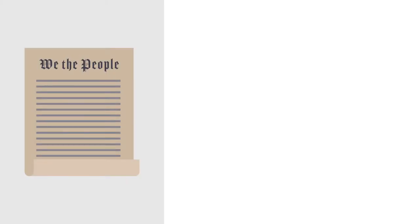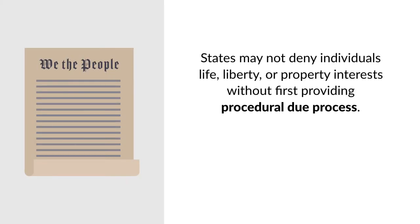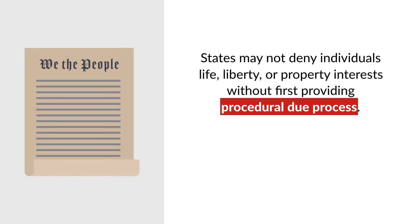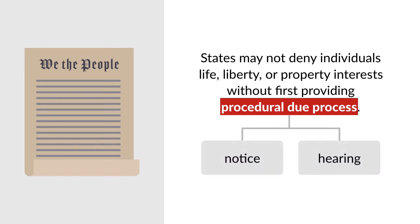The United States Constitution prohibits states from denying individuals life, liberty, or property interests without first providing procedural due process. Procedural due process generally requires providing a notice and a hearing. Equal protection may also be triggered in connection with due process claims when the government action impacts a certain class of persons.